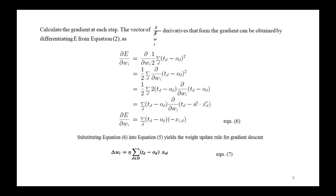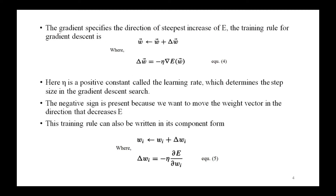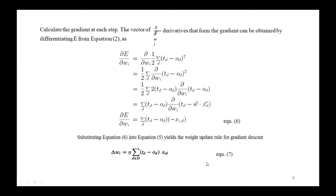To construct a practical algorithm for iteratively updating the weights according to the weight-update equation, we need an efficient way of calculating the gradient at each step. The gradient — delta E divided by delta w-i — can be obtained by differentiating capital E. So delta E divided by delta w-i equals delta divided by delta w-i of one-half times the summation of (t-d minus o-d) squared.